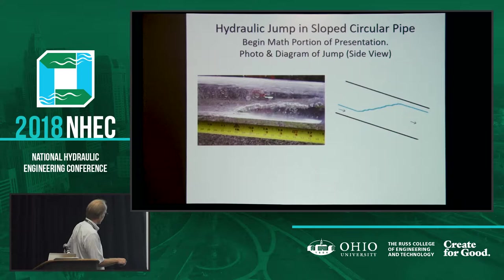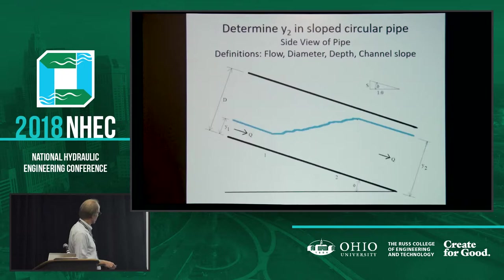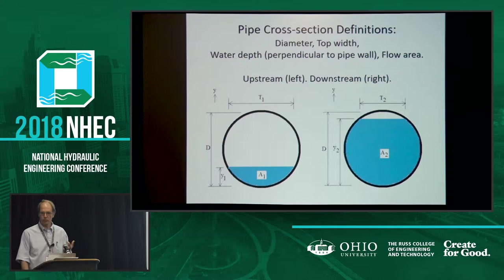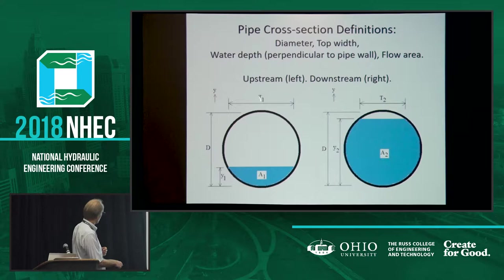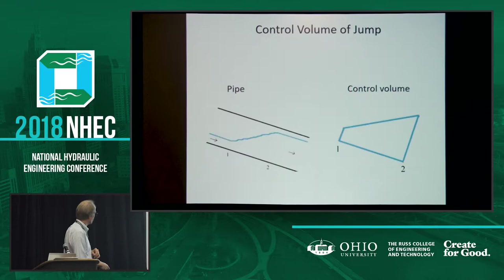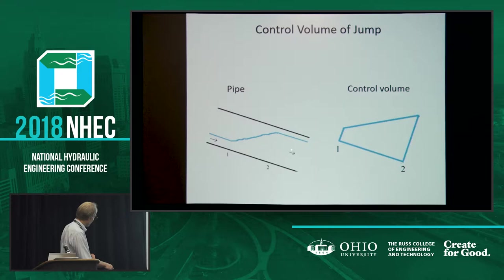Looking at it as a schematic drawing going from location one to two, where we have supercritical going to subcritical flow — labeling Y1, Y2, the inside diameter, and steady-state flow rate Q, and the slope of the pipe β. Reviewing some cross-sectional relationships from pipe geometry: once you know Y1 and the diameter, you can get the area, the top width, and so on with Y2. We can also define the central angle theta. Something that's important and very challenging for a sloped pipe is computing the location of the centroid for the area of flow.